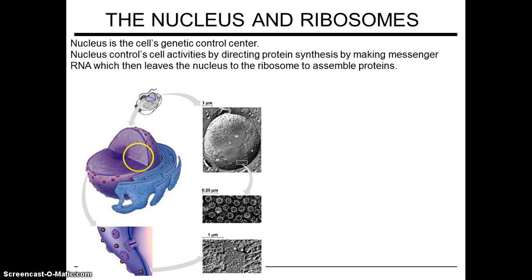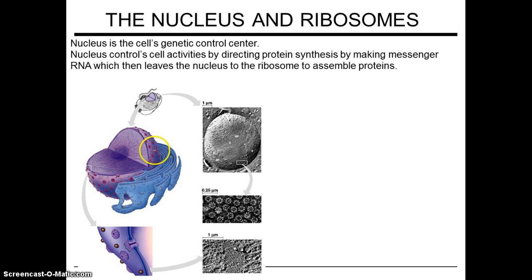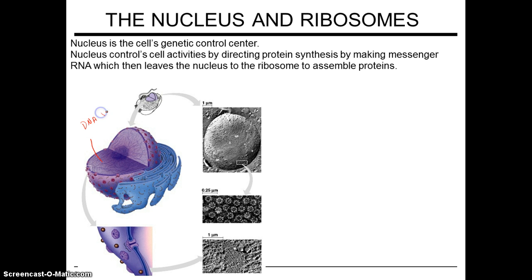If you look here, here's your nucleus and you see this dark area — that's called the nucleolus and that's where the ribosomal RNA is made. This nucleus is surrounded by a nuclear envelope with pores, and this is where the mRNA will pass through. And this dark matter is called chromatin. Chromatin is how DNA is packed — DNA is loosely packed in this case as chromatin.